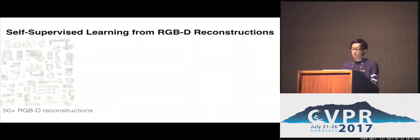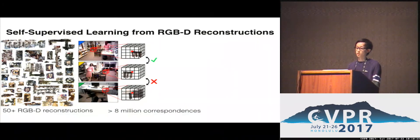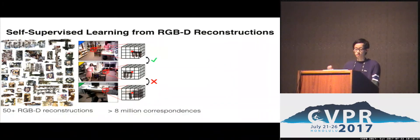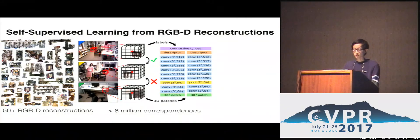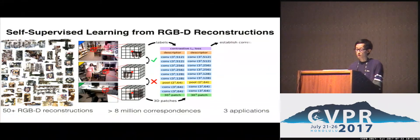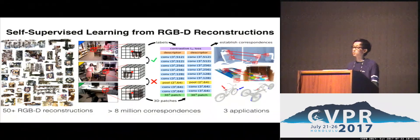To show this concept in action, we make use of over 50 different RGBD reconstructions and automatically generate over 8 million correspondences as well as their local 3D patches to self-supervise our 3D Match component. We then evaluate 3D Match and demonstrate its flexibility by using it in three very different applications.